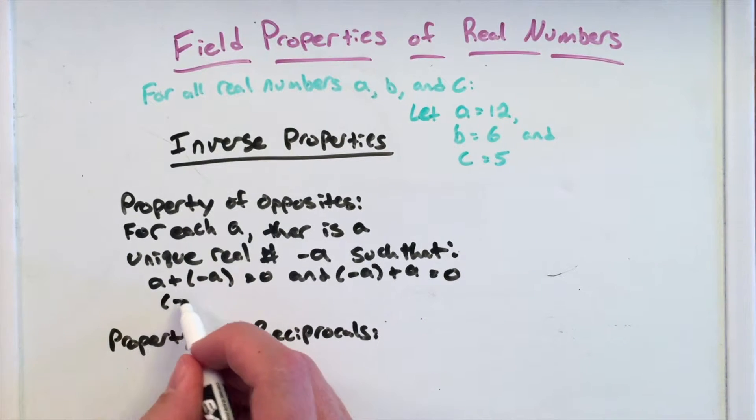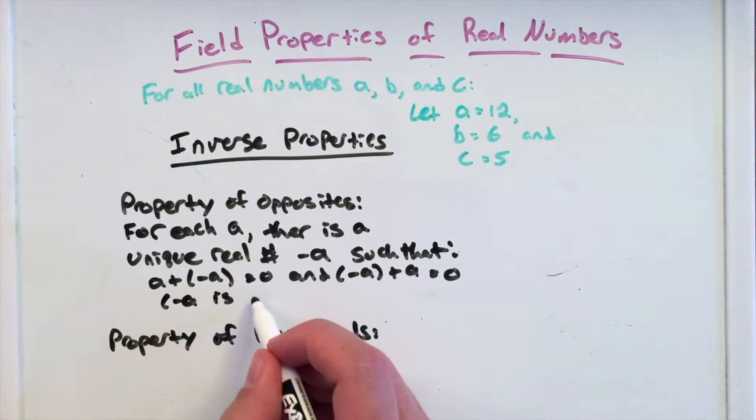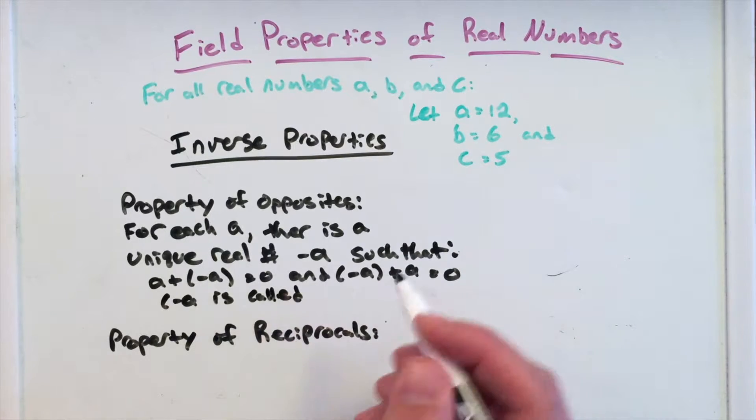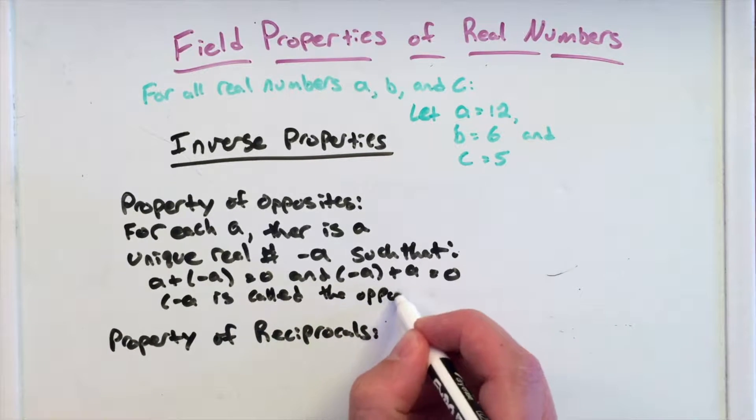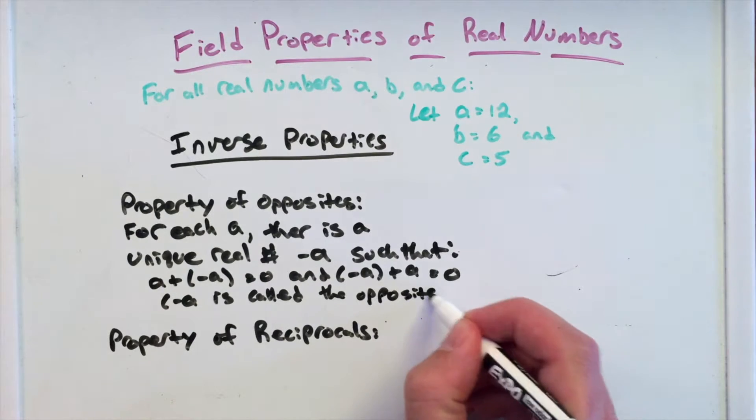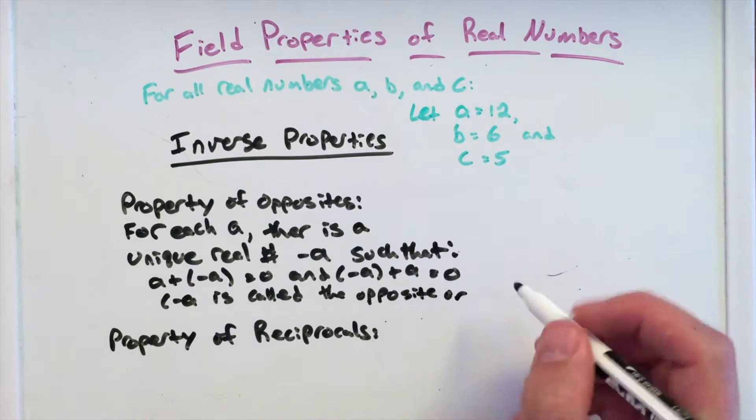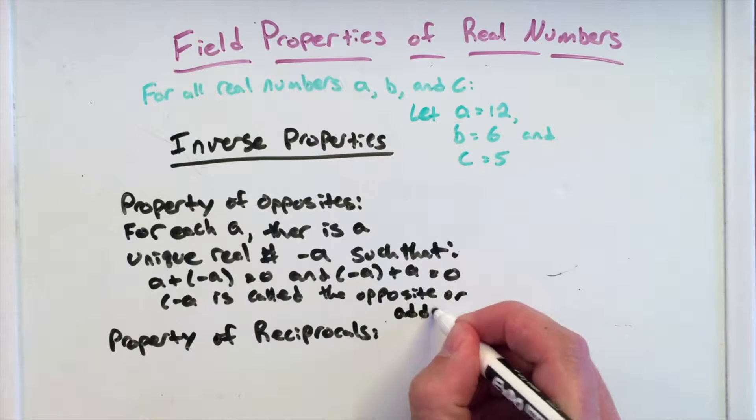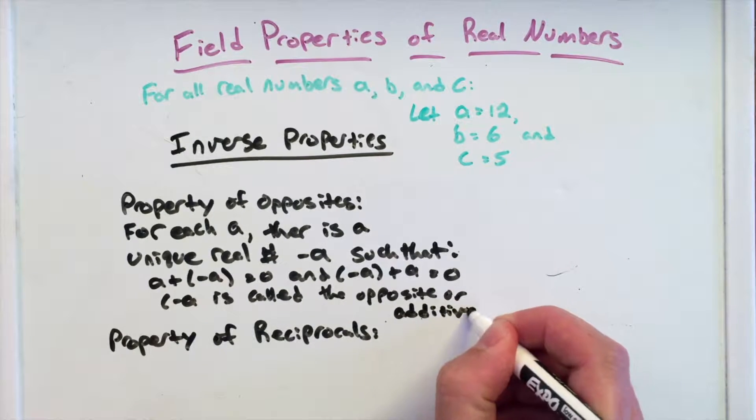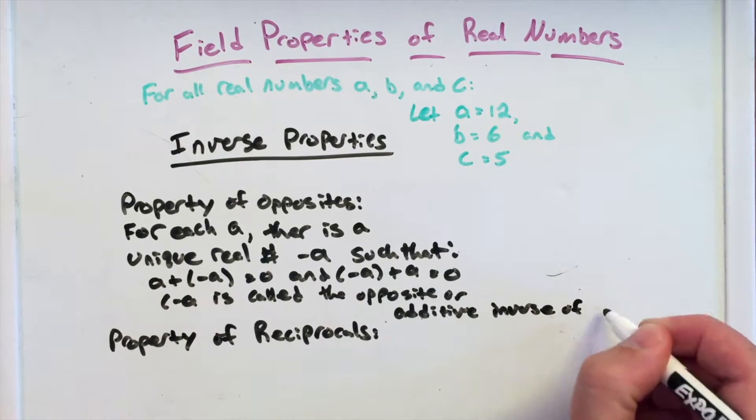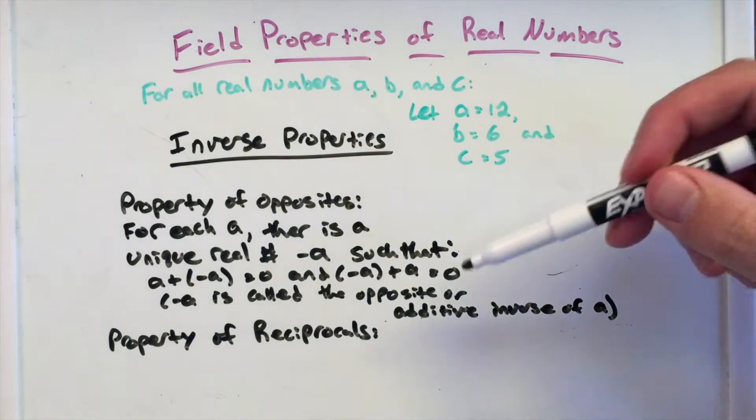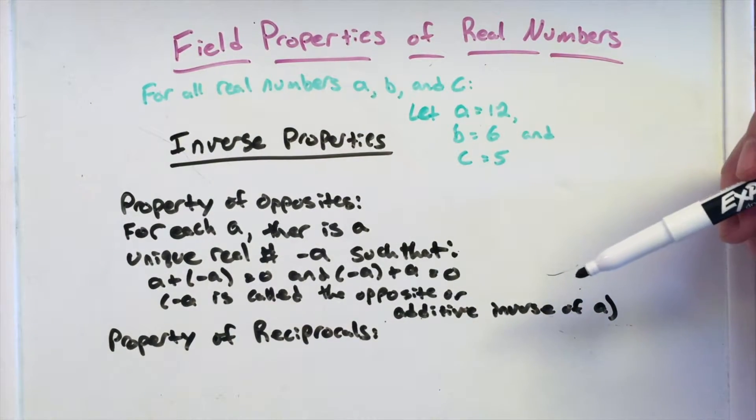We call that negative A is called the opposite or additive inverse of A. It's the opposite or additive inverse of A.